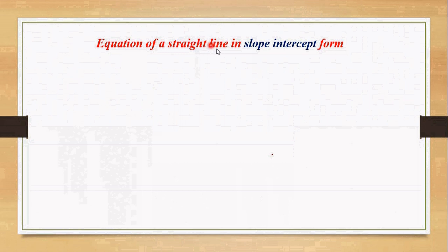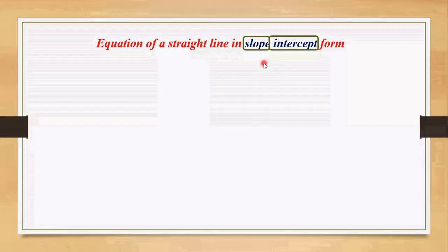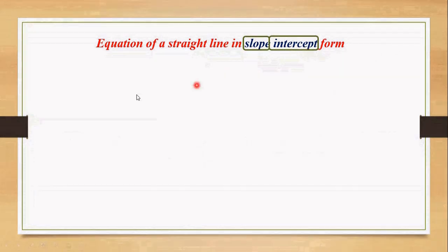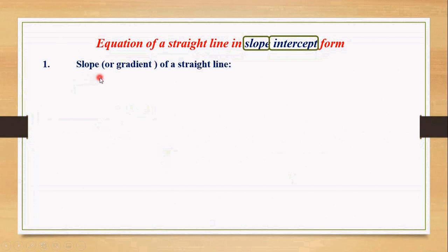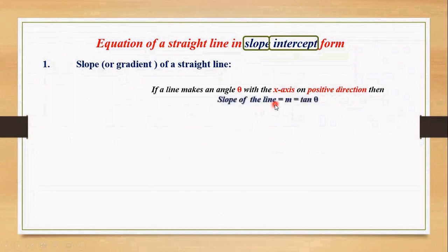In this statement there are two important terms: slope and intercept. First of all let's define these two terms. First, slope or gradient of a straight line. If a line makes an angle theta with the x-axis in the positive direction, then slope of the line, which is denoted by m, is equals to tan theta.